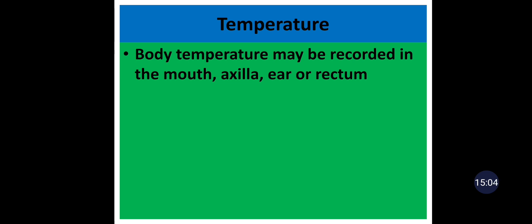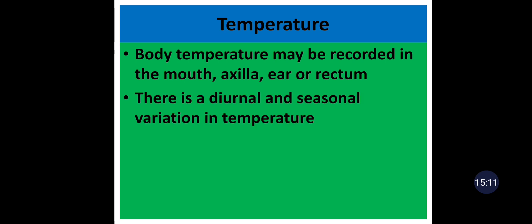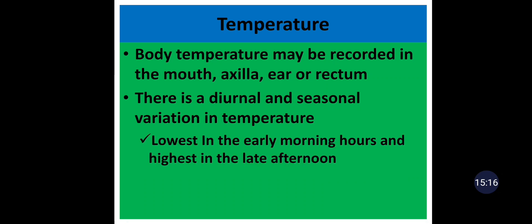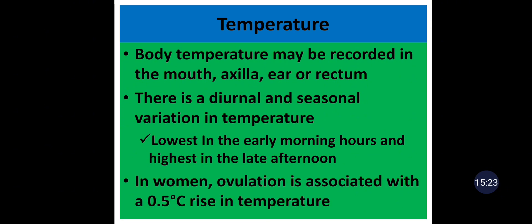Body temperature is generated from the liver and skeletal muscles and is dissipated by the skin and lungs. There is a diurnal and seasonal variation in temperature — lowest in the early morning hours and highest in the late afternoon. The normal diurnal variation is about 0.5 degrees Celsius. In women, ovulation is associated with a 0.5 degrees Celsius rise in temperature.